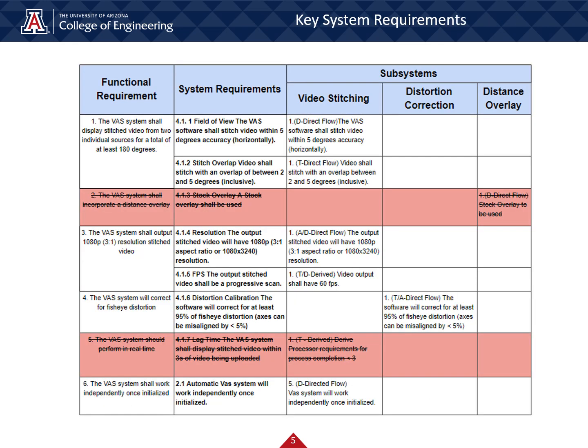Taking a look at the project's subsystem flowdown — from functional requirement to system requirements to design the subsystem requirement — maps out how our team needed to tackle this project. The two most important system requirements gave specifications for the amount of fisheye distortion to be corrected and the amount of overlap the software could work with while stitching. The red requirements and all subsystem requirements specifying the need for performance in real time as well as a distance overlay have been removed with an engineering change request in conjunction with our sponsors.